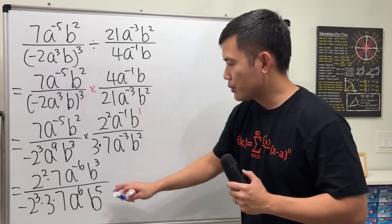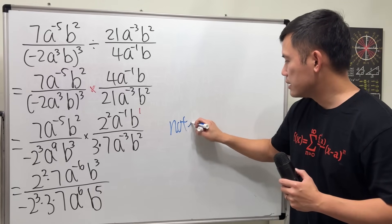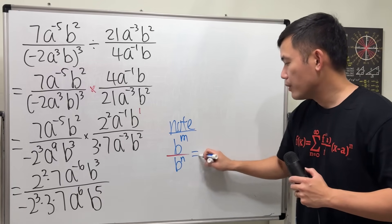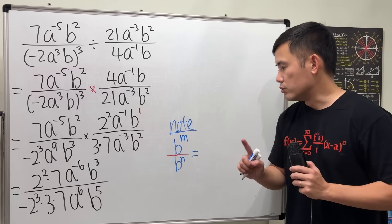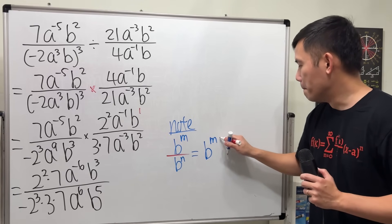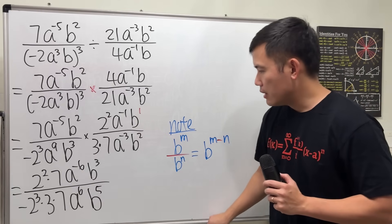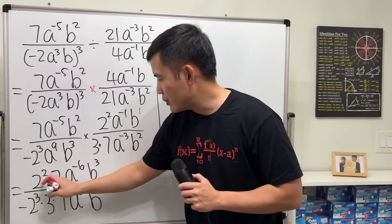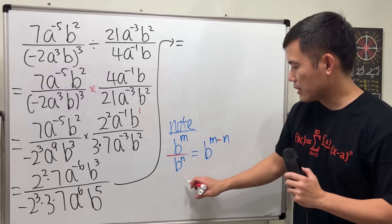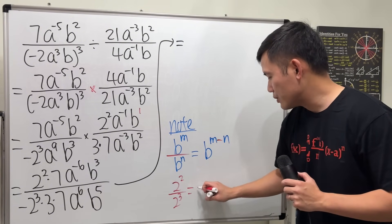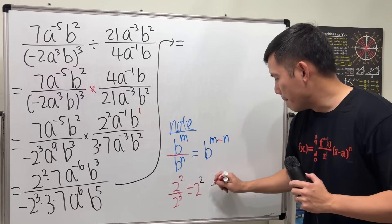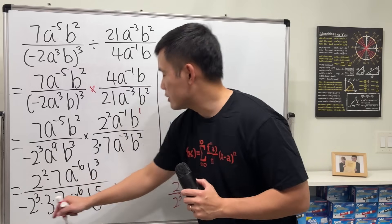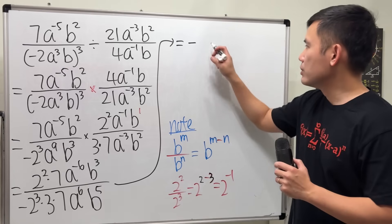Now the last part — we are going to divide the top by the bottom. The crucial rule of exponents here: if we have b to the m divided by b to the n, we subtract the exponents — it's the top one minus the bottom one, giving b to the m minus n. Let's apply that. We have 2 to the 2nd over 2 to the 3rd — keep the 2, do 2 minus 3, which gives us 2 to the negative 1.